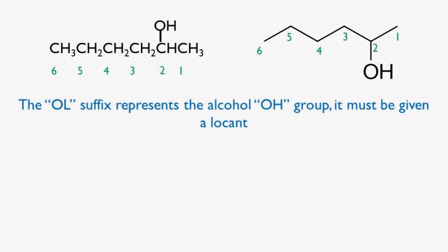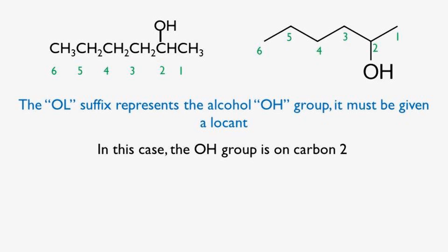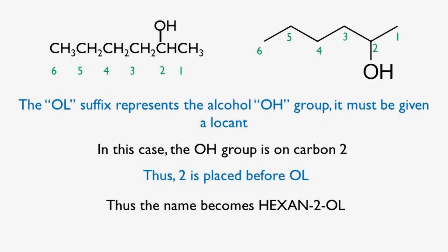Rule number three. To get the full name of the alcohol, the location of the OH group must be indicated. To do this, we must place the locant of the OH group before the -ol suffix. In this case, the OH group is on carbon number 2. Therefore, we place the number 2 before the -ol ending. Thus, the name becomes hexan-2-ol. It's a hexanol, meaning there are 6 carbon atoms, one of which has an OH group. The number 2 before the -ol indicates that the OH group is on carbon number 2.